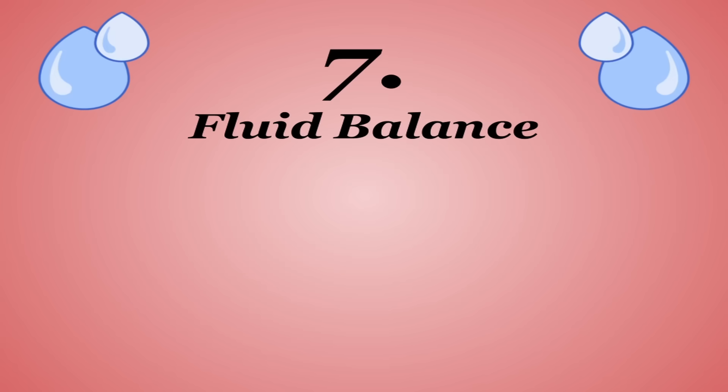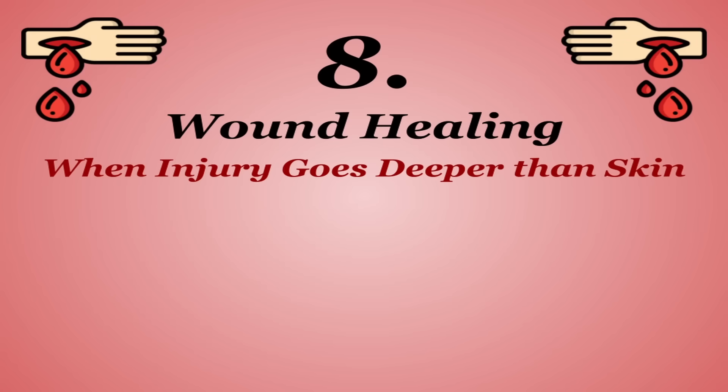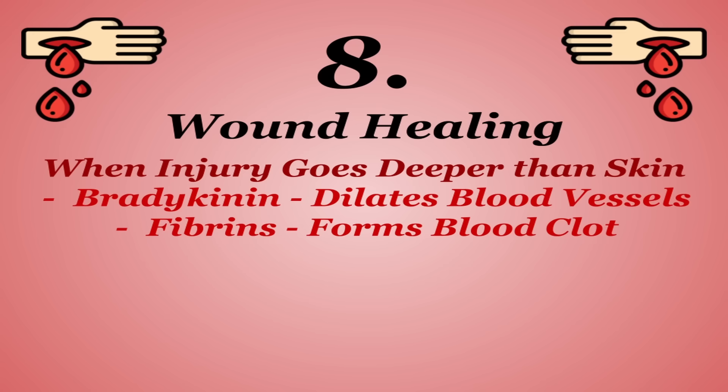Number seven is fluid balance, notably albumin, a protein in your blood that attracts and retains water. Number eight is wound healing. When you get an injury that pierces the skin, several proteins come into play like bradykinin, which dilates blood vessels at the wound, fibrin, which secures platelets that form a blood clot, and the mending of scar tissue is made largely of collagen.